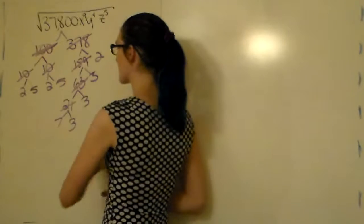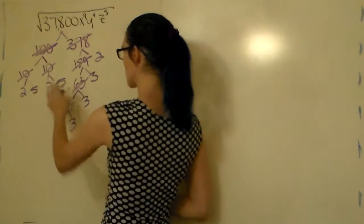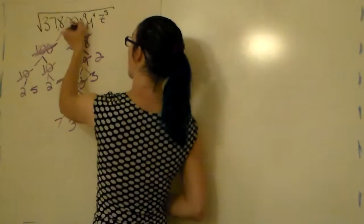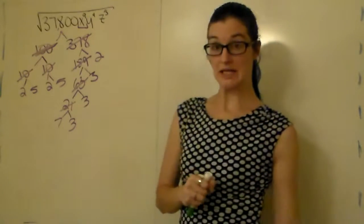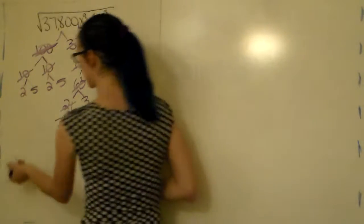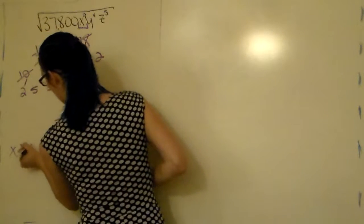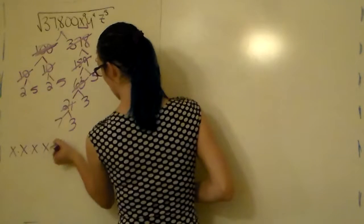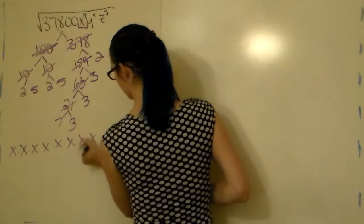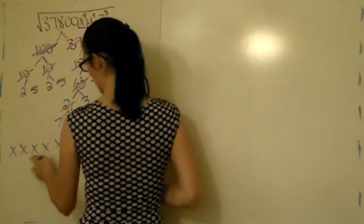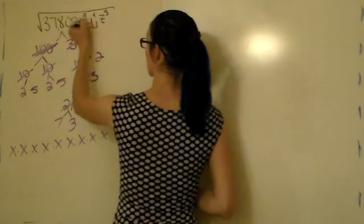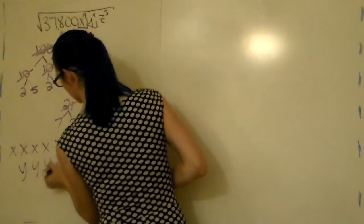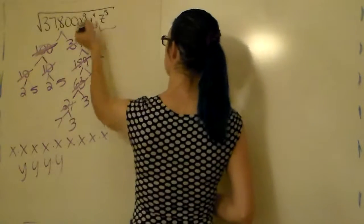So all my prime factors are: 2, 5, 2, 5, 7, 3, 3, 3, and 2. Inside the radicand I also have nine x's — x to the ninth is x times x times x, all the way until you have nine of them. So we have nine x's, four y's, and five z's.